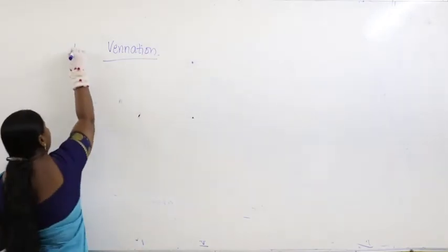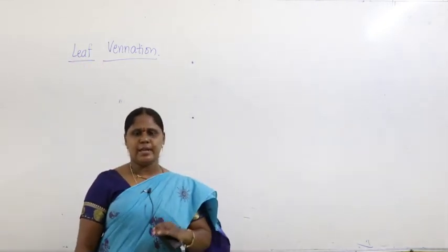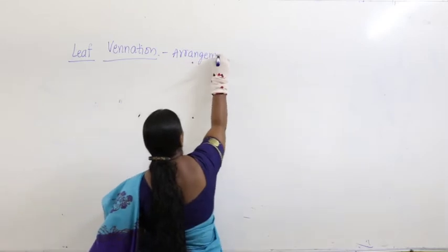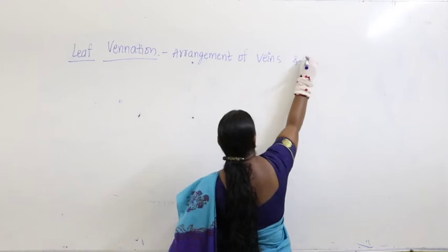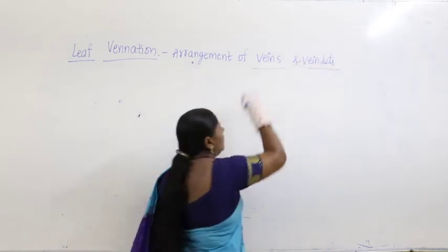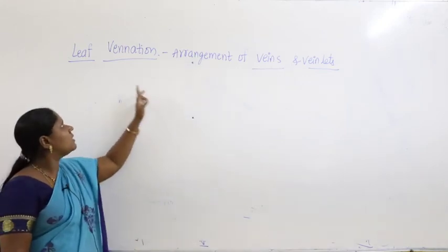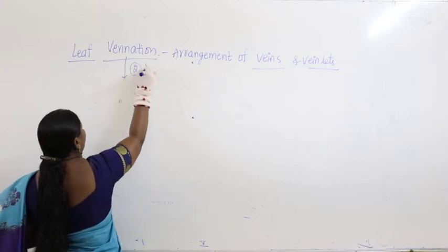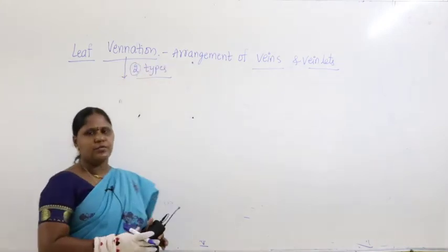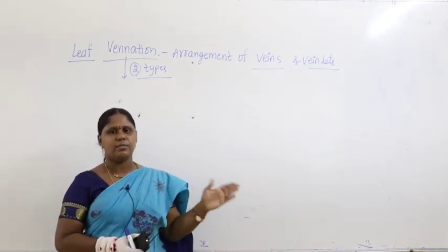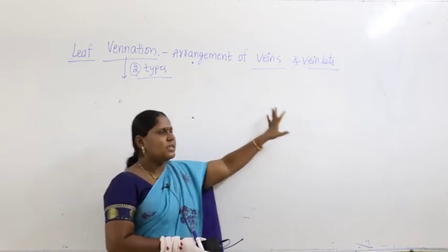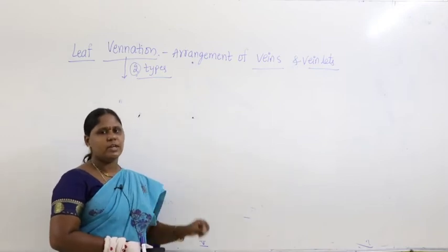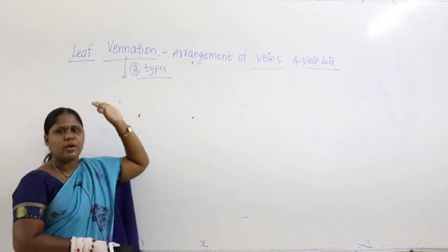Now let us talk about leaf venation. Venation is the arrangement of veins and veinlets in a leaf. According to the arrangement of veins and veinlets, venation is of two types.